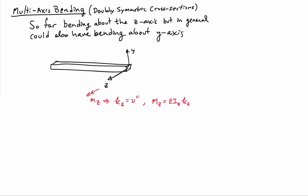Just to remind ourselves: if we have a moment about the z-axis, then we will have curvature about the z-axis, which is given by the second derivative of the deflection in the y-direction. We also have the relationship between the moment about the z-axis and the curvature about the z-axis, given by multiplying the curvature by EI, where I is the moment of inertia about the z-axis — specifically, I_z equals the integral of y-squared dA. That's what we've been doing up to now.